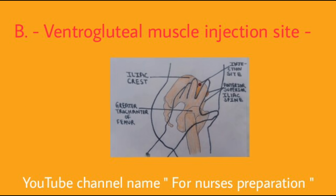Ventrogluteal Muscle Injection Site: This injection site is chosen for the administration of narcotics, antibiotics, sedatives, anti-emetics, and other medicines. More than 1 ml of medicine can be administered at this site.